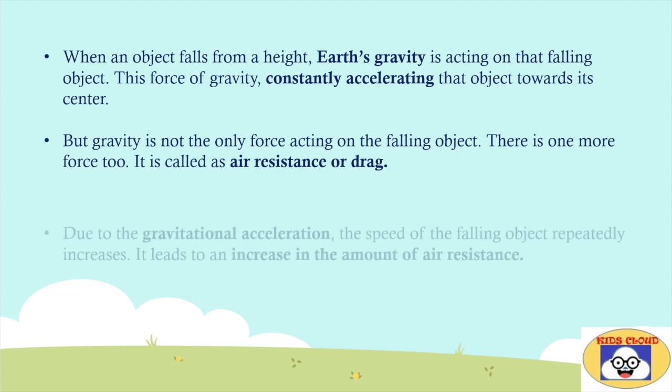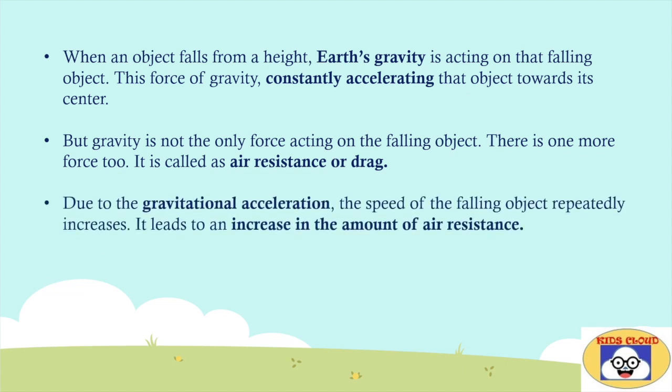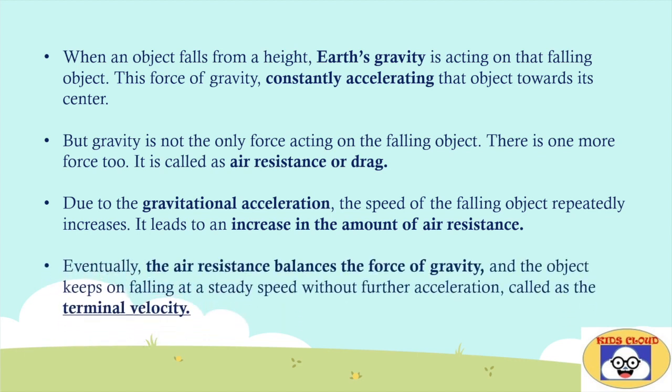Due to the gravitational acceleration, the speed of the falling object repeatedly increases. It leads to an increase in the amount of air resistance. Eventually, the air resistance balances the force of gravity, and the object keeps on falling at a steady speed without further acceleration called as the terminal velocity.